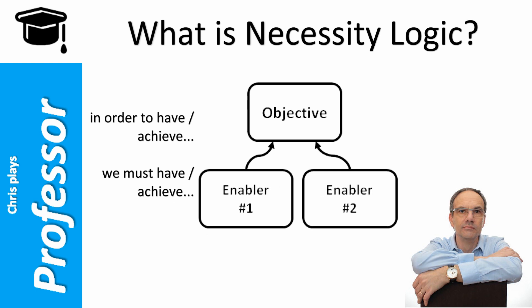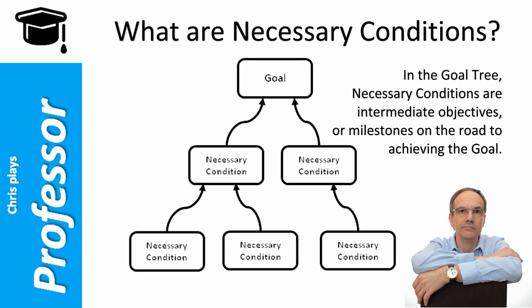Necessary conditions are enabled for the upper objective to be achieved. In the goal tree necessary conditions are intermediate objectives or milestones on the road to achieving the goal.